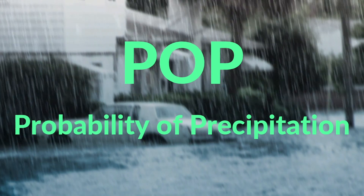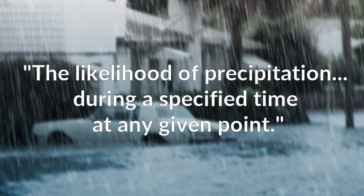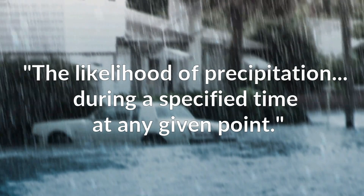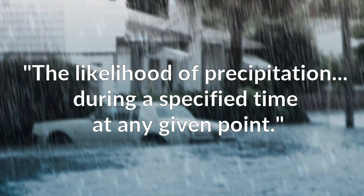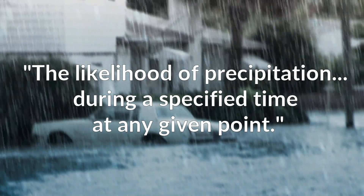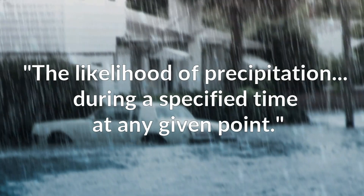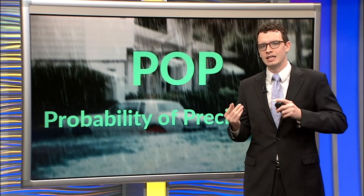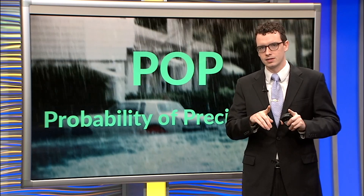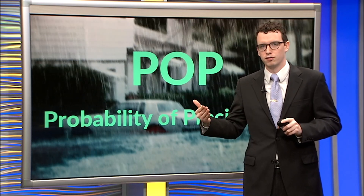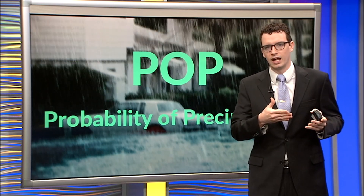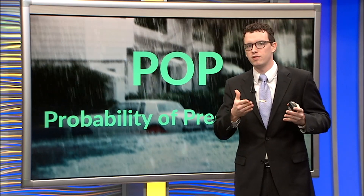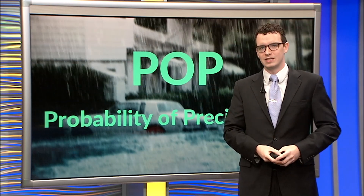The accepted definition used by meteorologists is the likelihood of a measurable amount of precipitation during a specified period of time at any given point in the forecast area. The big takeaway is that it is a point forecast, not an area forecast. It's not 50% of the area will see rain, and it's not 50% of the day will have rain — it's a 50% chance of rain at a specific point.